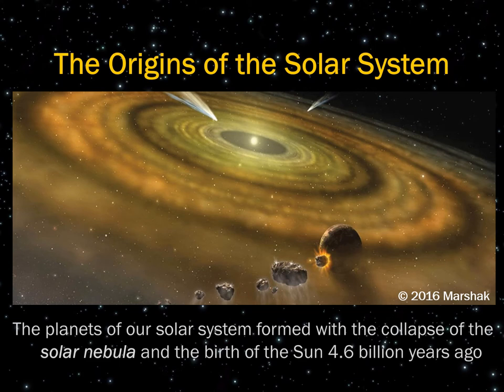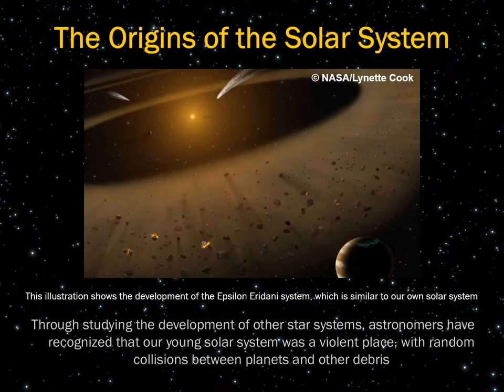The planets of our solar system were born with the collapse of the solar nebula and the birth of the sun 4.6 billion years ago. The sun, all the planets, all debris — asteroids, comets, all that material and radiation — is contained within our solar system and is timed to be 4.6 billion years old. Through studying the development of other star systems, astronomers have recognized that our young solar system was a violent place, with random collisions between planets and other debris. This illustration shows the development of the Epsilon Eridani system, which is similar to our own solar system.